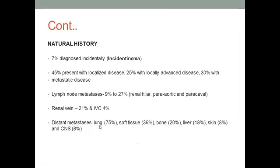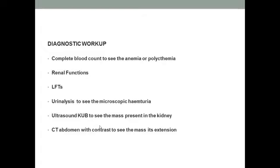In natural history, early tumors are increasingly diagnosed incidentally as incidentalomas. About 45 percent present with localized disease, regional invasion is seen in 21 percent, IVC involvement in 4 percent. Distant metastasis can occur to the lungs, bones, liver, skin, and CNS. Diagnosis starts with a complete CBC, which may show anemia or polycythemia depending on whether erythropoietin production or blood loss predominates, plus LFTs and urine analysis to detect microscopic hematuria.